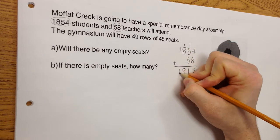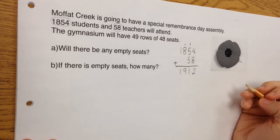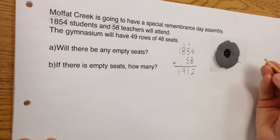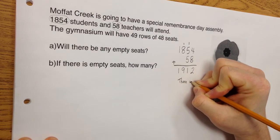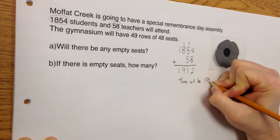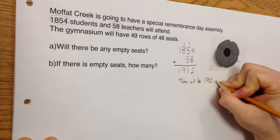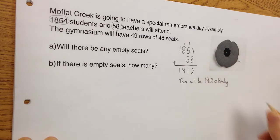And the last one, which is in the 1,000 column, is 1. So in total, I have 1,912 people. So if I'm explaining my thinking, maybe I can say that there will be 1,912 people attending. Awesome.